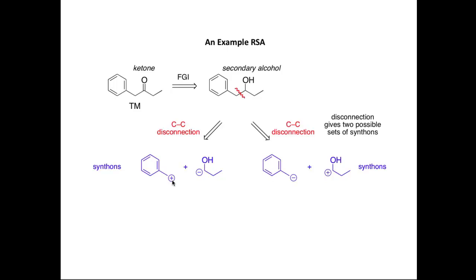You can put a positive charge on the left and a minus on the right-hand side, or alternatively, we could put a minus on the left-hand portion and a plus on the right-hand side. These are the two possible sets of synthons that we can get from disconnection of this carbon-carbon bond. The challenge now is to assign synthetic equivalents to each of those synthons.